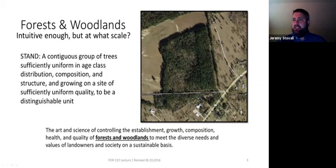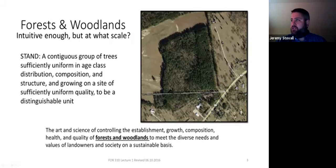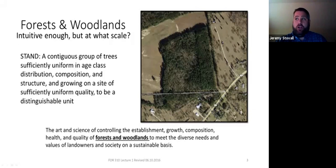Here's the definition of a stand: a contiguous group of trees, sufficiently uniform in age class, distribution, composition, and structure, and growing on a site of sufficiently uniform quality to be a distinguishable unit. This is obviously a distinguishable unit. There may be cases where you'd want to split this into two stands — the area to the right of this road is far more pine-dominated. You could split this into multiple stands depending on your landowner objective, who owns the land, and what you're trying to do.